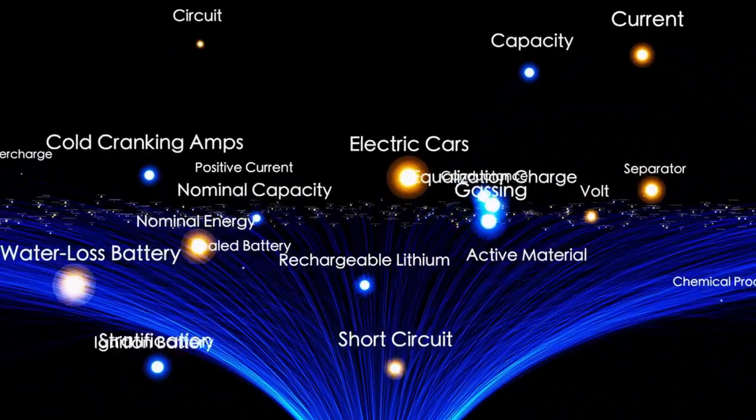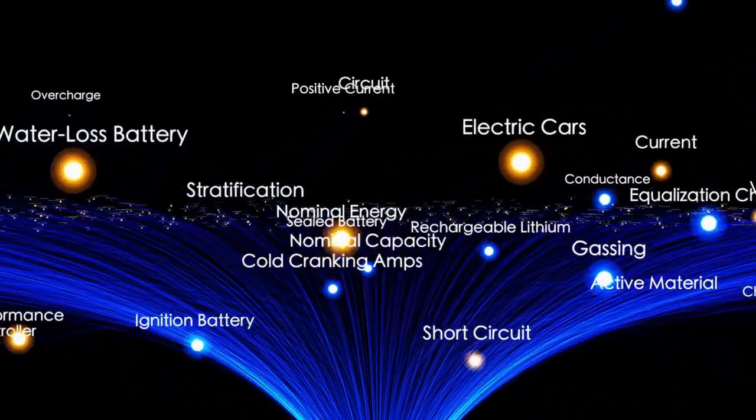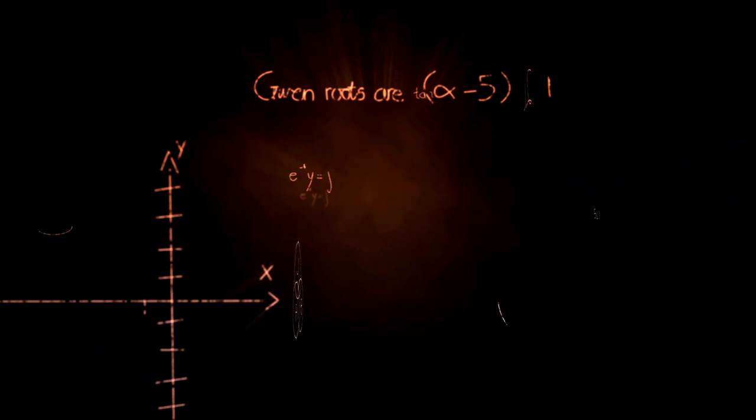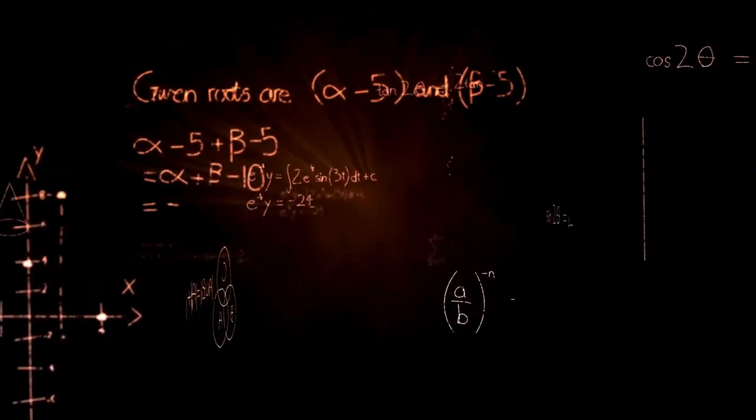If dark flow does exist, it could point to something very large and unknown lying beyond the observable universe, something that is pulling on galaxies and affecting their movement.